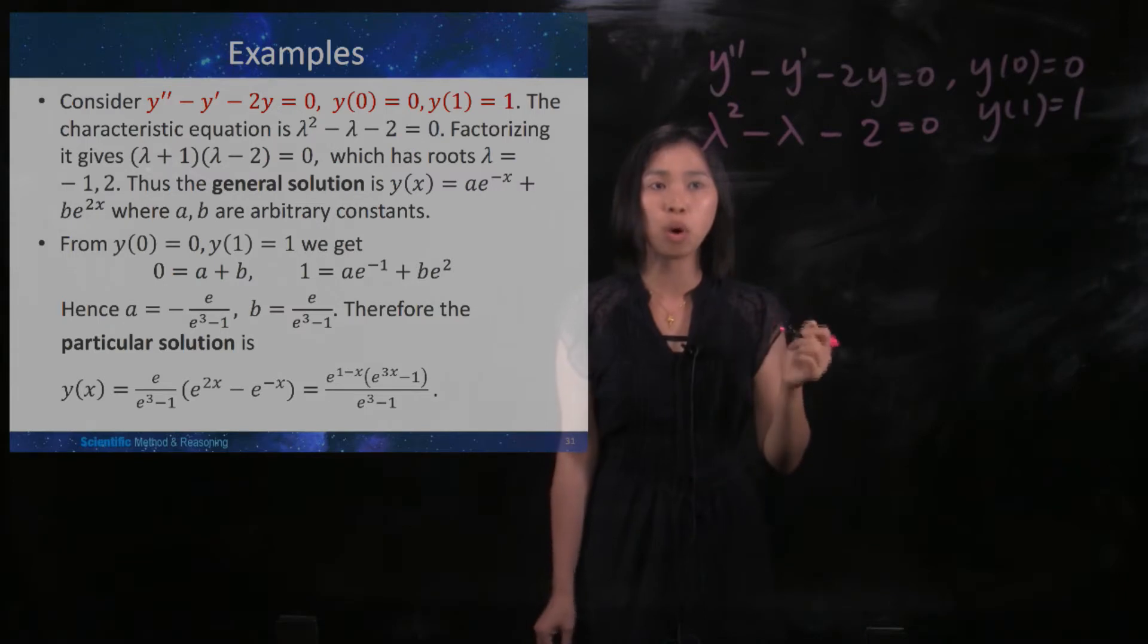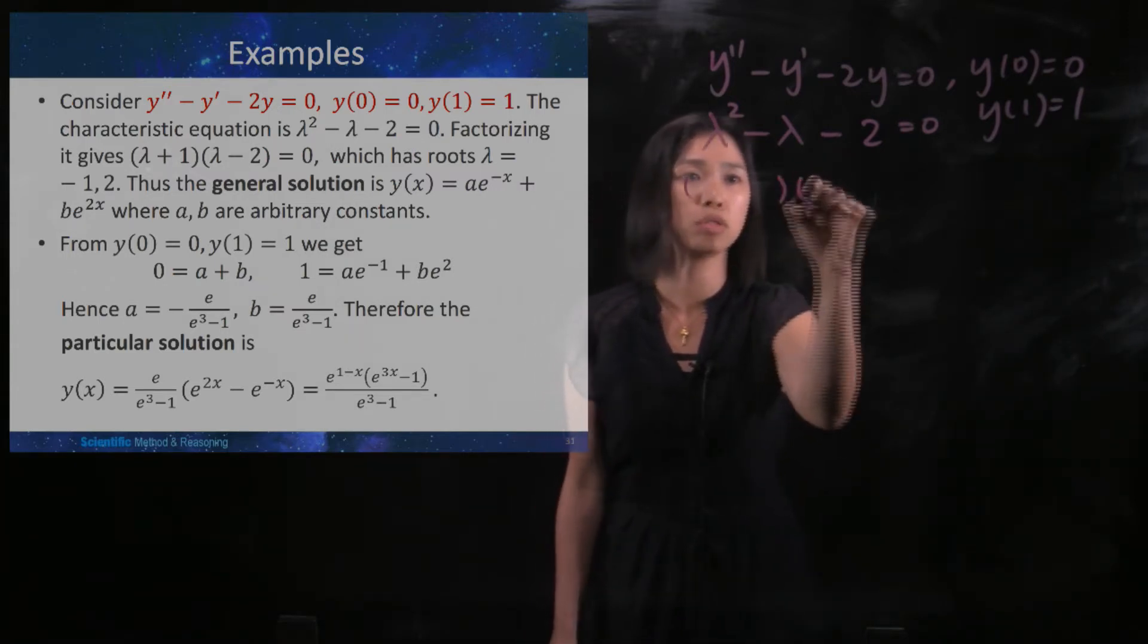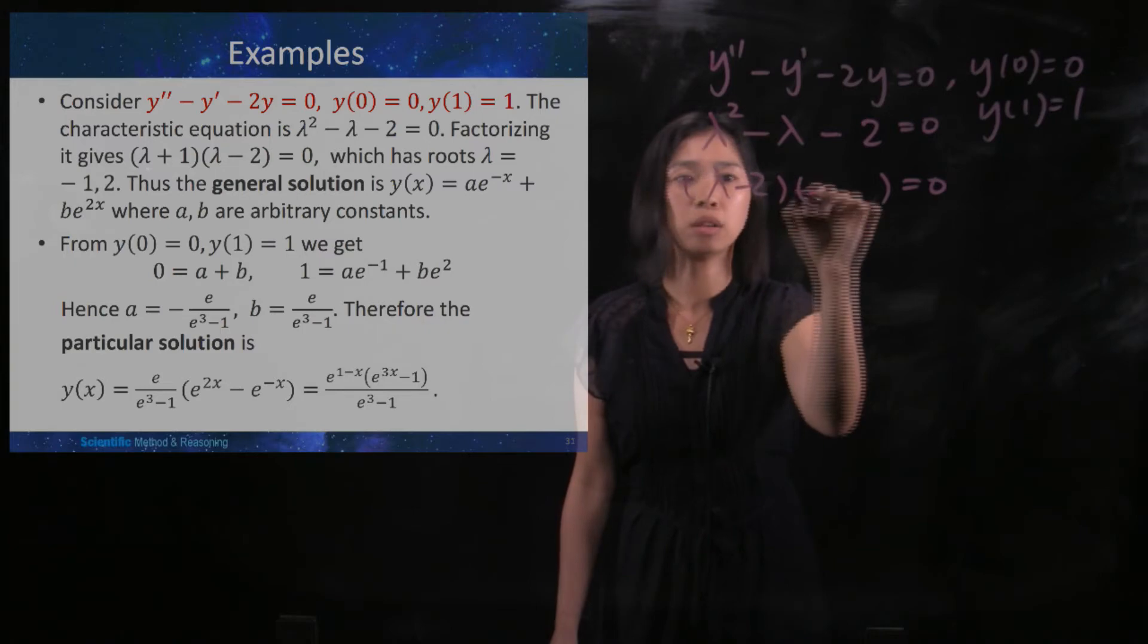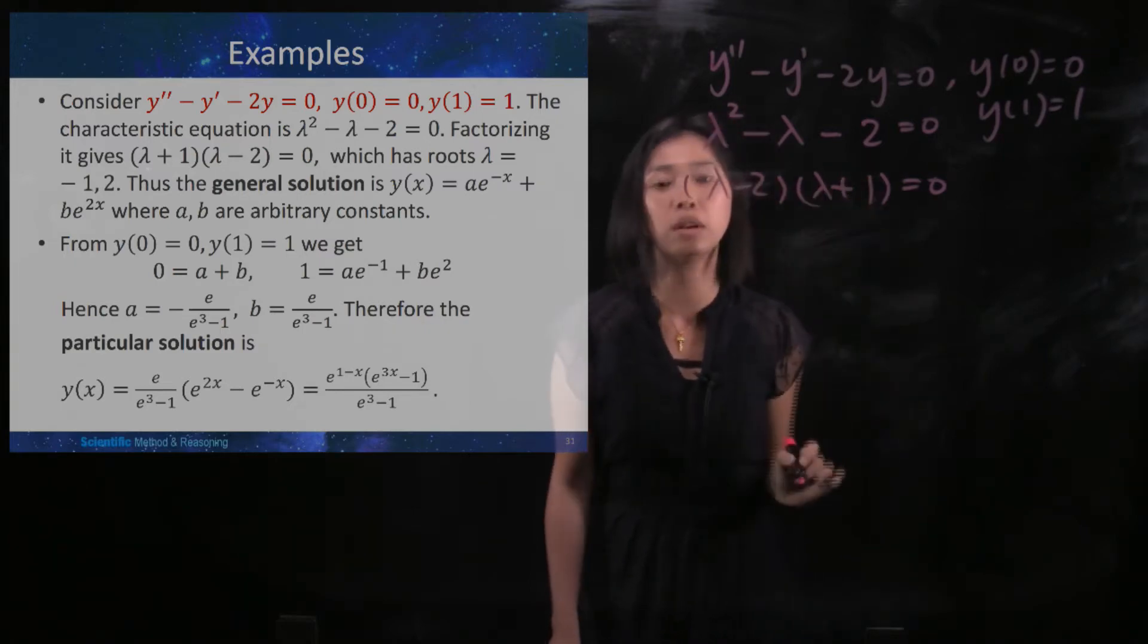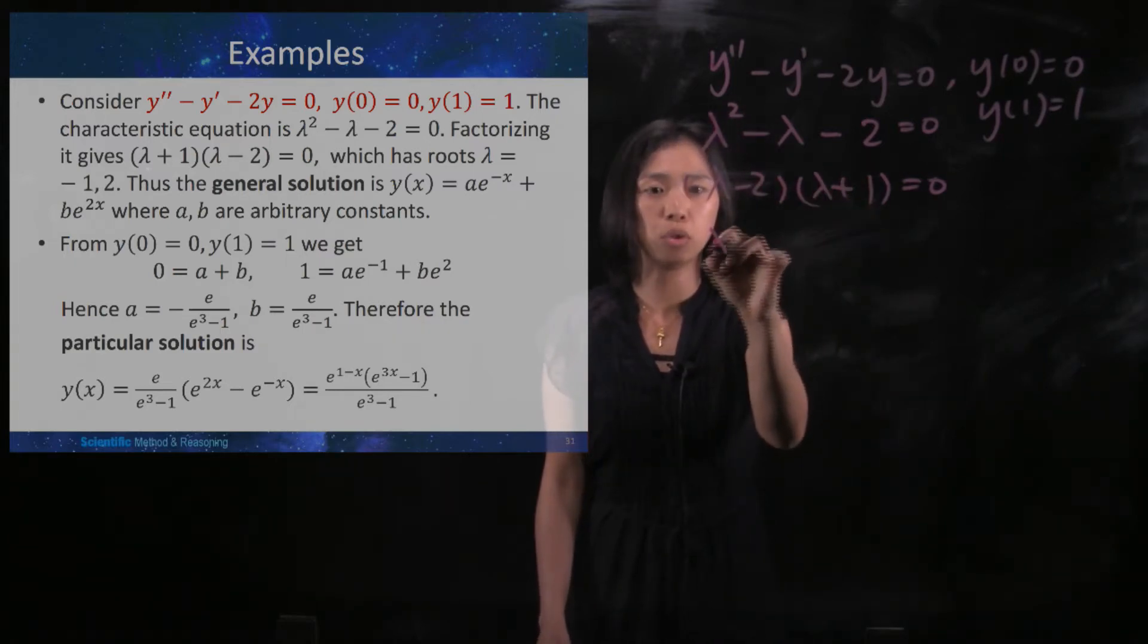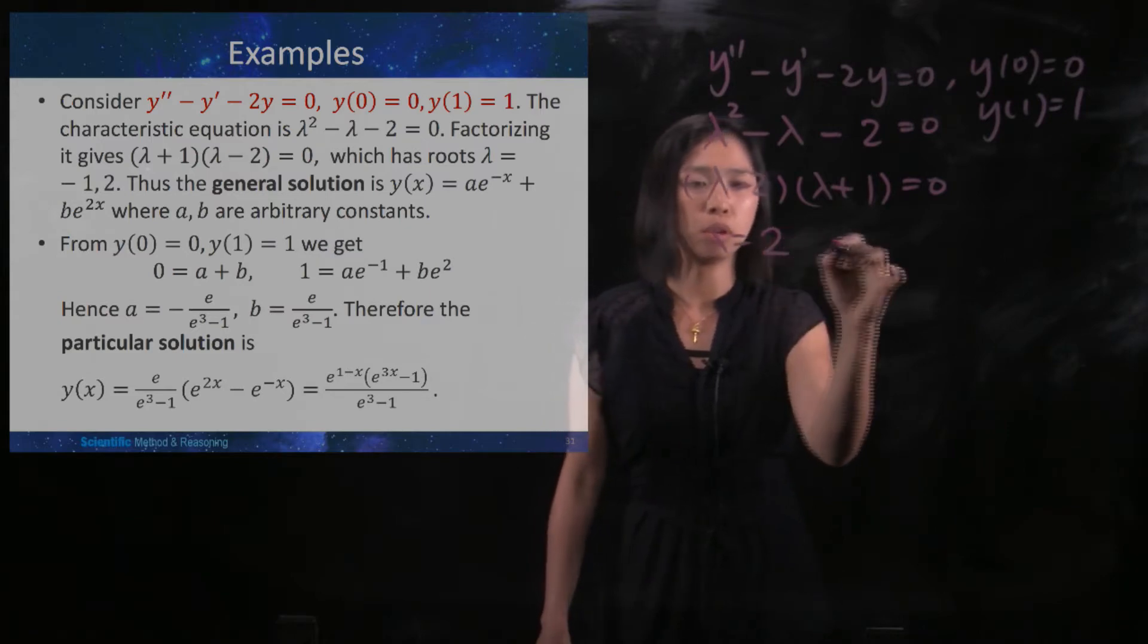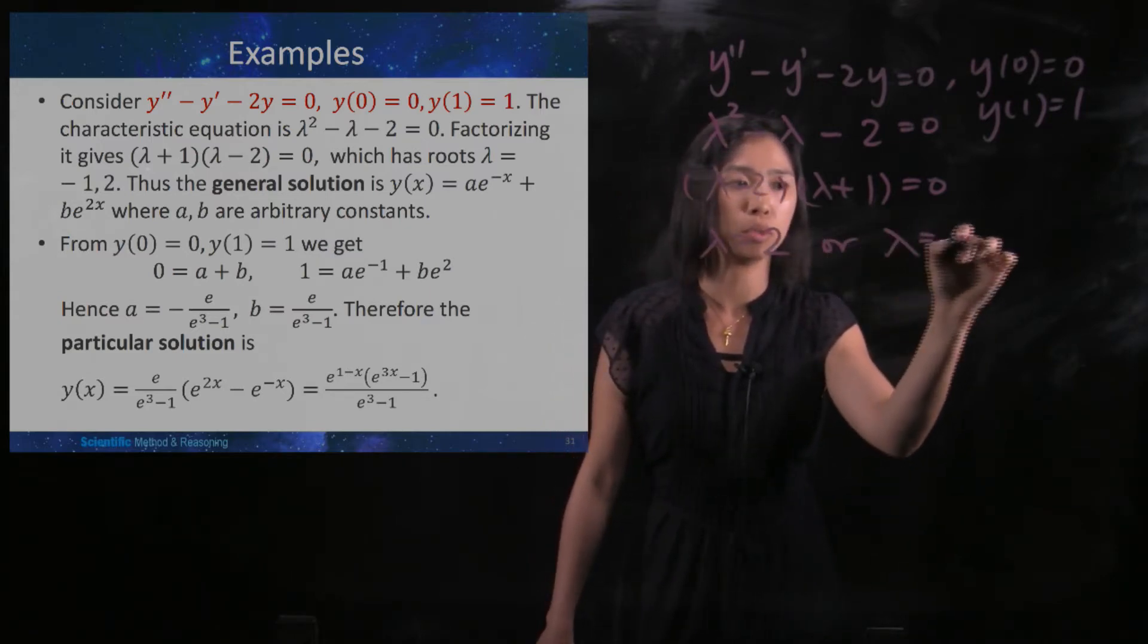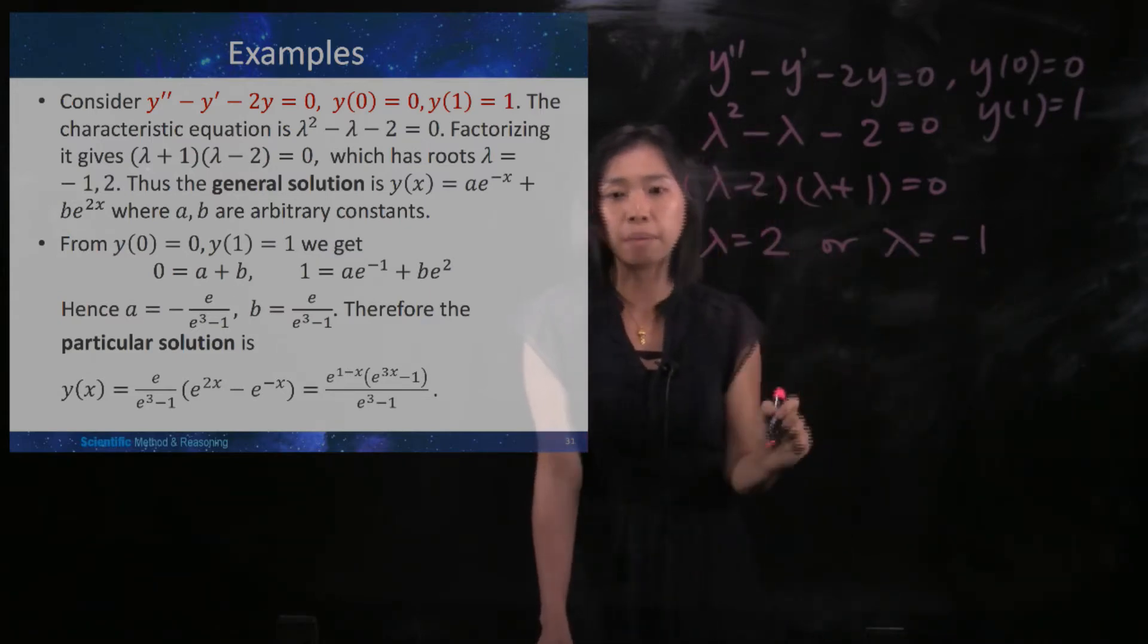In step two, it is required you to do your factorization. So we got (λ - 2)(λ + 1) = 0. Then you will have two roots: λ = 2 or λ = -1. Both of them are simple roots.